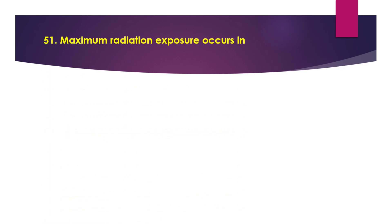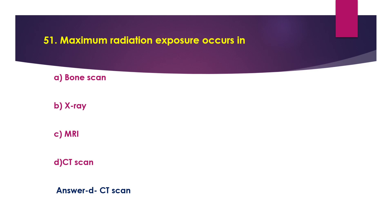Question 51: Maximum radiation exposure occurs in — Option A: bone scan. Option B: X-ray. Option C: MRI. Option D: CT scan. The answer is option D, CT scan. The effective doses from diagnostic CT procedures are typically estimated to be in the range of 1 to 10 millisievert.